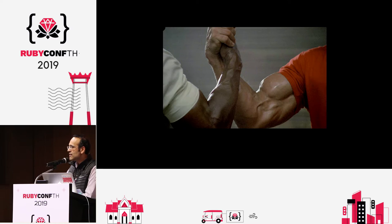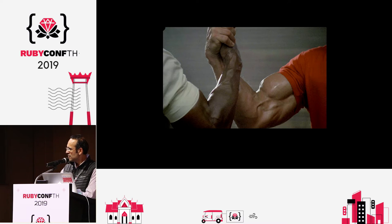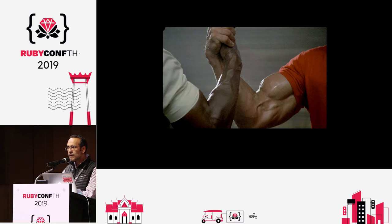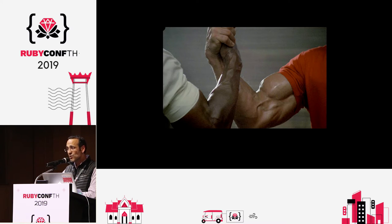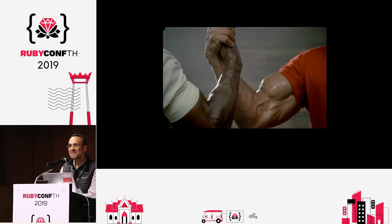Ruby versus C — this is the dilemma I faced at this point in the investigation. Remember this famous arm wrestle scene? Name that movie. The guy on the right is Arnold Schwarzenegger. That's right — but let's talk after.